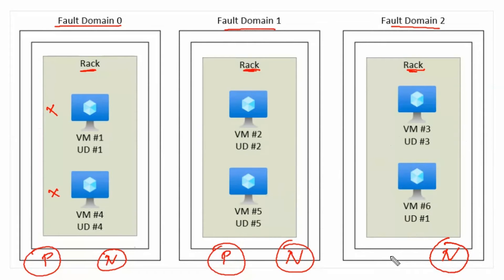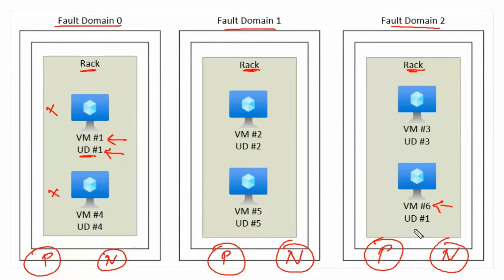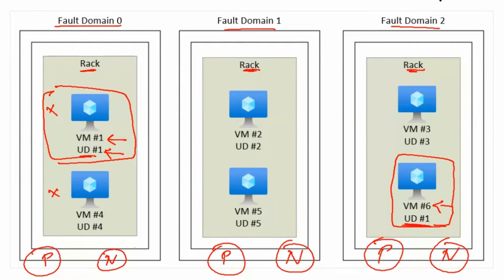Update domains are a logical grouping of virtual machines. For example, VM1 and VM6 are both members of update domain 1. Therefore, if any planned maintenance occurs, VM1 and VM6 would restart together, while the remaining virtual machines keep running, making sure the service is always available.